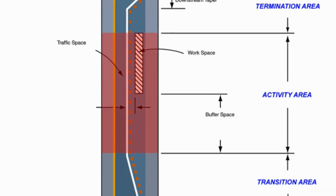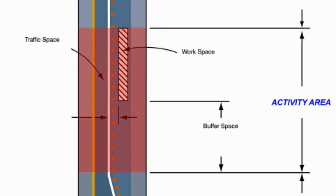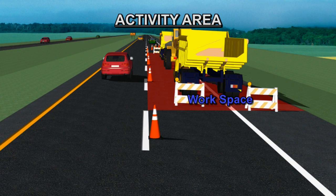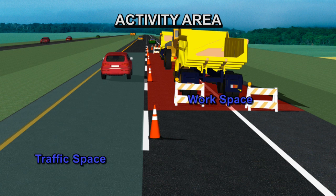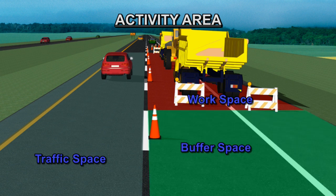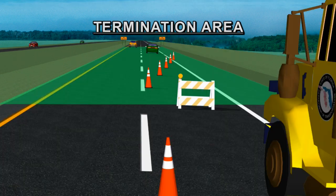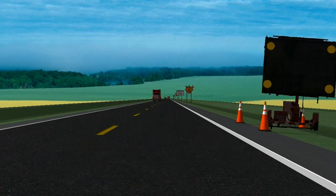The activity area is the section of the highway where the work activity takes place. It is comprised of the workspace, which is for workers, equipment, and their vehicles; the traffic space, which is the portion of the highway in which road users are routed through the activity area; and the buffer space, which provides the margin of safety for both traffic and workers by providing some recovery space for an errant vehicle.